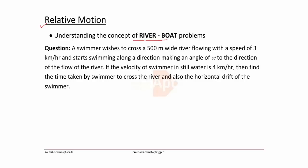This is a sample question. A swimmer wishes to cross a 500-meter wide river flowing with a speed of 3 km/h, and starts swimming along a direction making an angle of 30 degrees to the direction of flow of the river. If the velocity of the swimmer in still water is 4 km/h, find the time taken to cross the river and the horizontal drift.